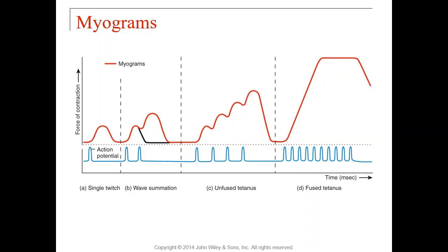After contracting, the muscle needs to relax — shown in green. It spends a large portion of time relaxing, almost half the chart, because it takes time to destroy the acetylcholine released from the axon terminal and to pump all that calcium back into the sarcoplasmic reticulum. Your muscle cells spend a lot of time resetting and getting ready for another contraction.